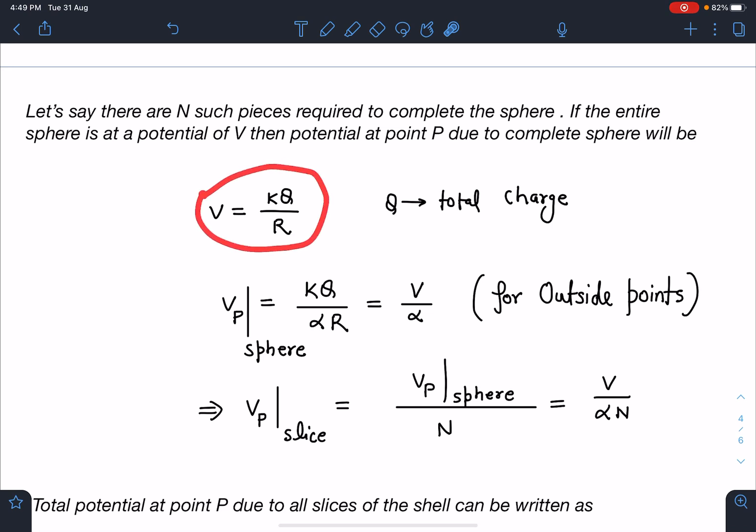At point P, due to this complete sphere, potential I can simply write, because α is greater than 1, so it is an outside point. So we can use the logic of shell theorem. We can say here the potential at P due to the complete sphere is kQ by αR, which is V by α.